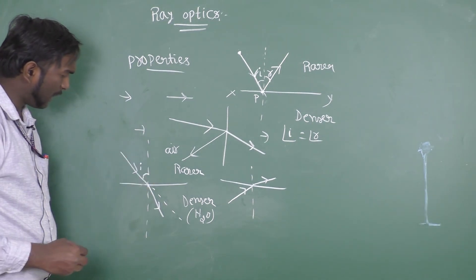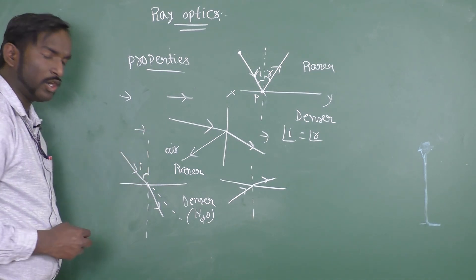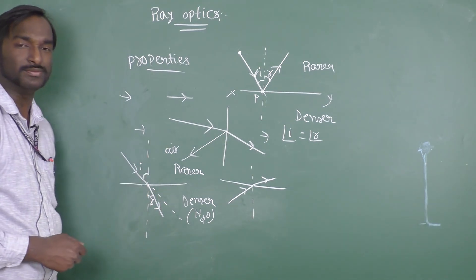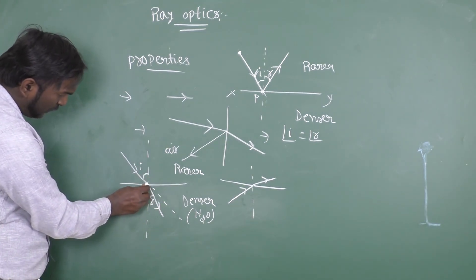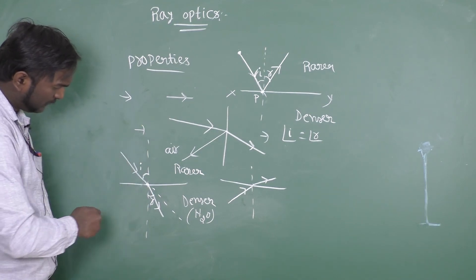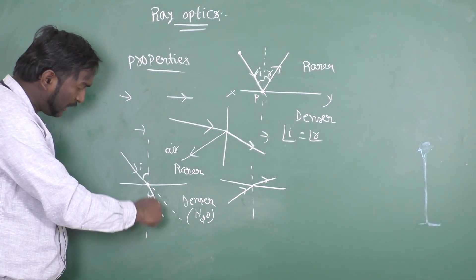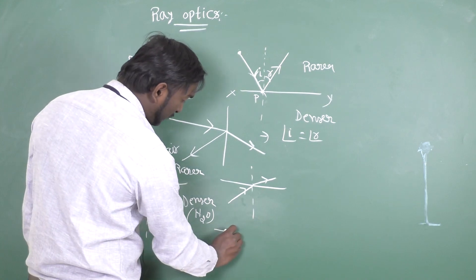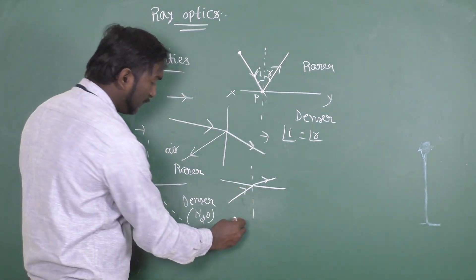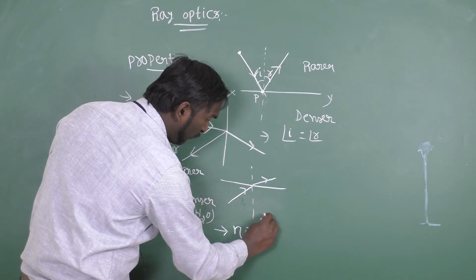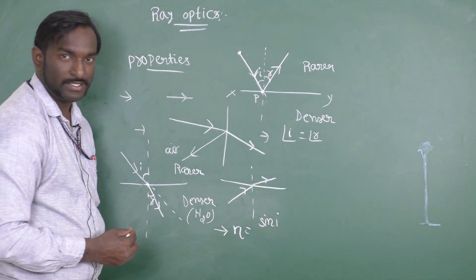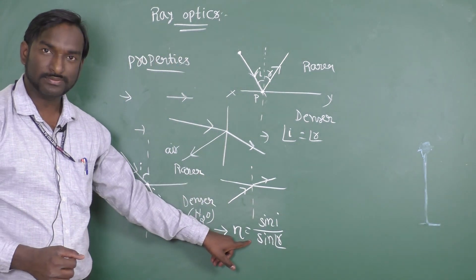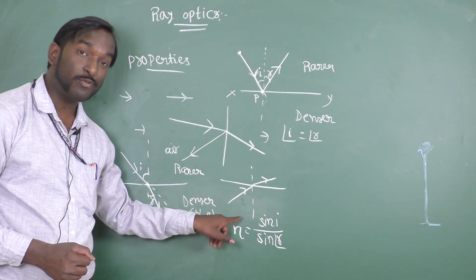The angle of incidence is the angle between the incident ray and the normal ray. The angle of refraction is the angle between the refracted ray and the normal ray. At the point of incidence, the incident ray, refracted ray, and normal ray all lie in the same plane. According to Snell's law, the ratio of sine of angle of incidence to the sine of angle of refraction is always constant, and that constant is the refractive index of the medium.